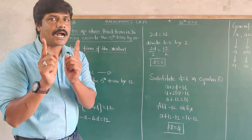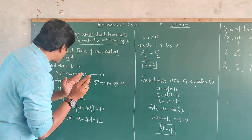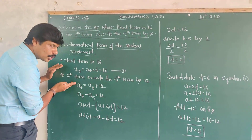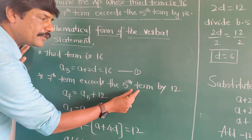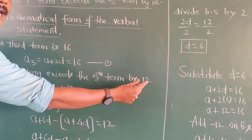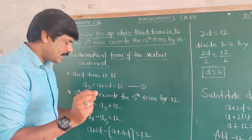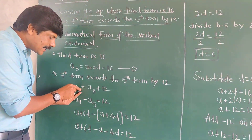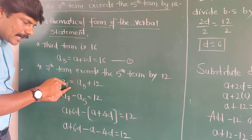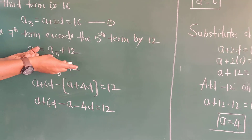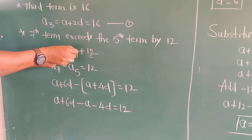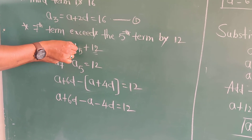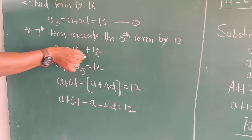The seventh term is 12 more than the fifth term. That is the second clue. So, the seventh term exceeds the fifth term by 12, meaning when you add 12 to the fifth term, it becomes equal to the seventh term.